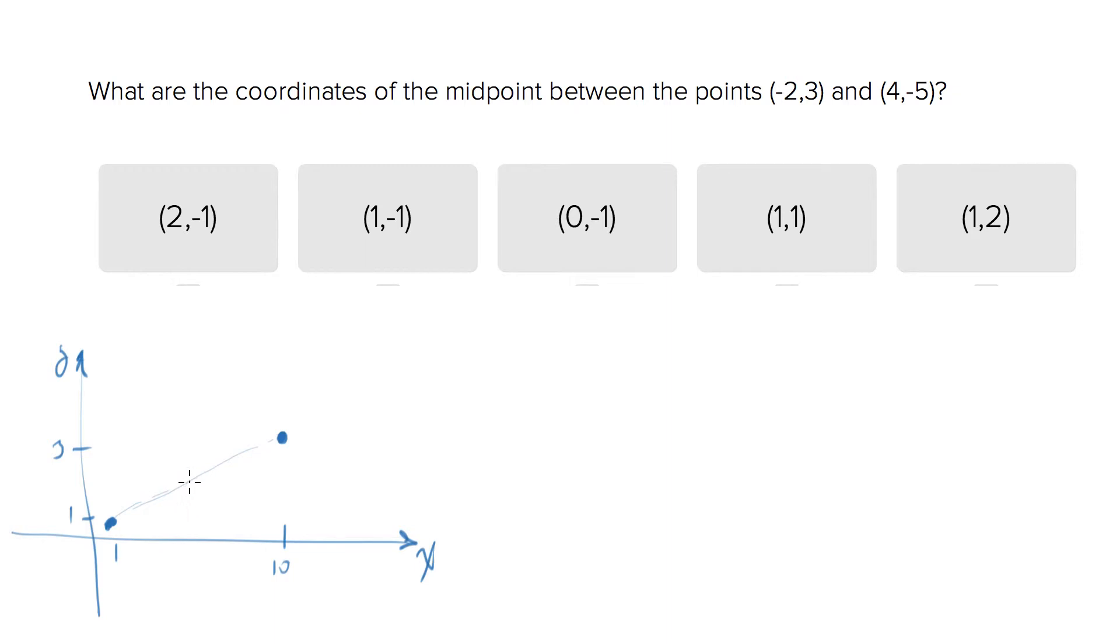is halfway between the X coordinates and halfway between the Y coordinates. So it'll always be right there. So you really just need to find the midpoint of the X coordinates, which you can think of as the average of the X coordinates, and the midpoint of the Y coordinates, which is the average of the Y coordinates.